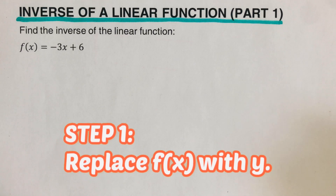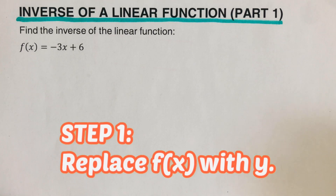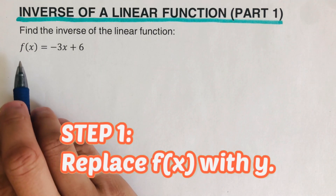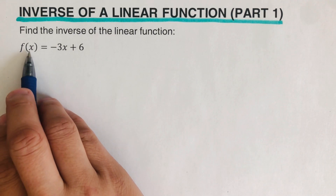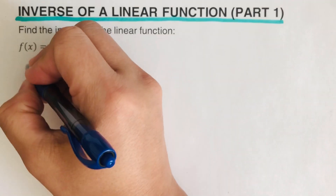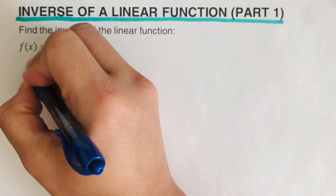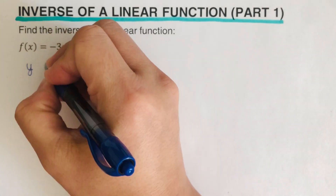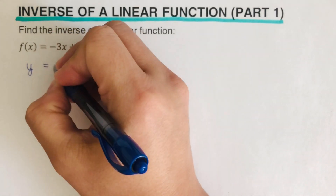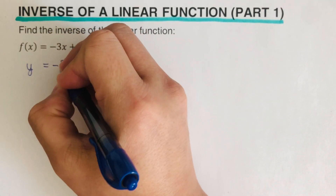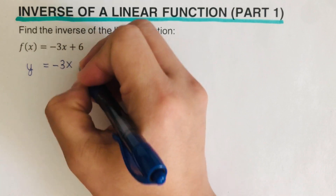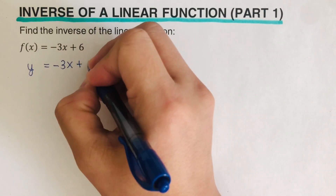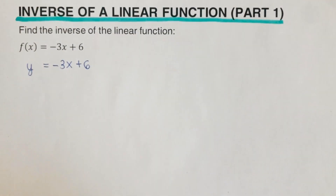The first step is to replace f(x) with y. So what we're going to do is replace f(x) with y, giving us y = -3x + 6. We are done with the first step.